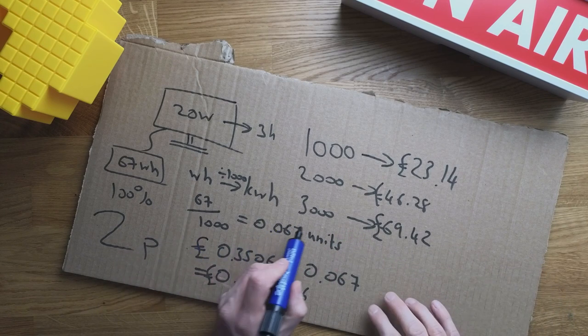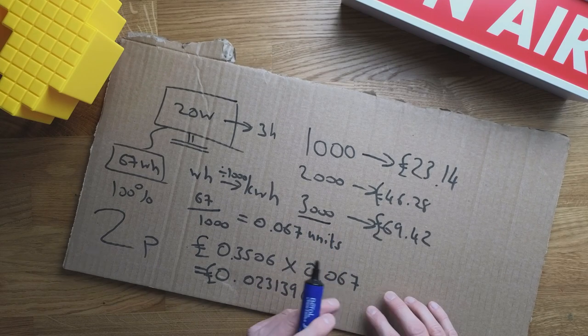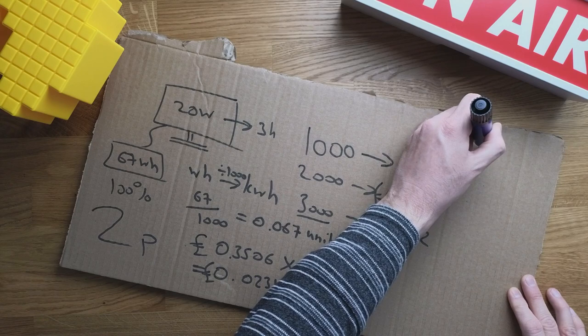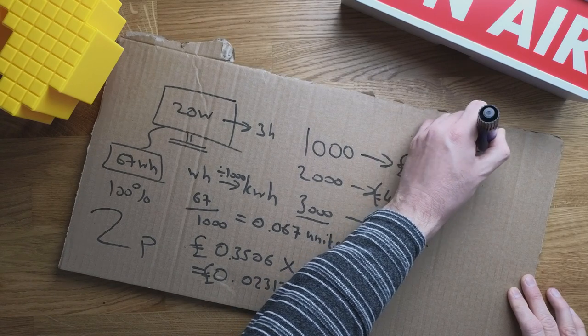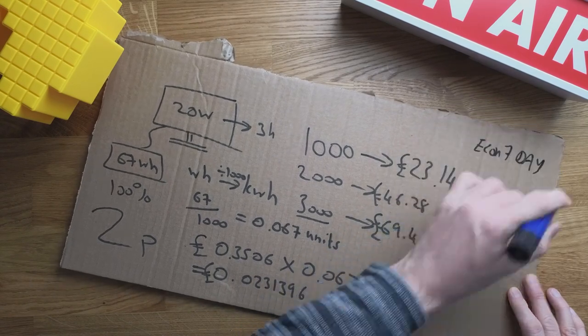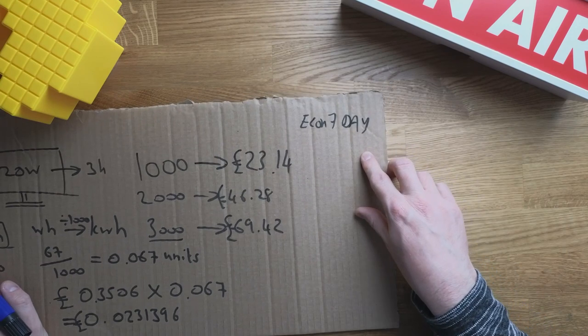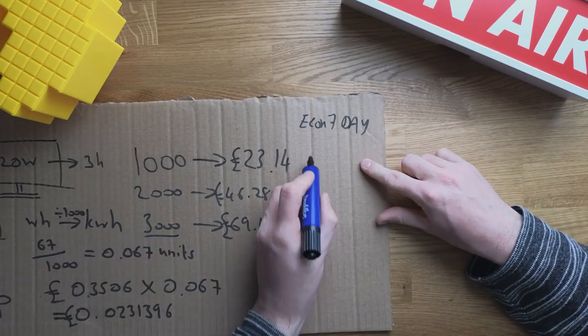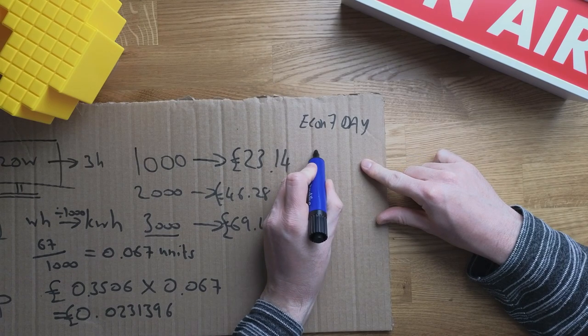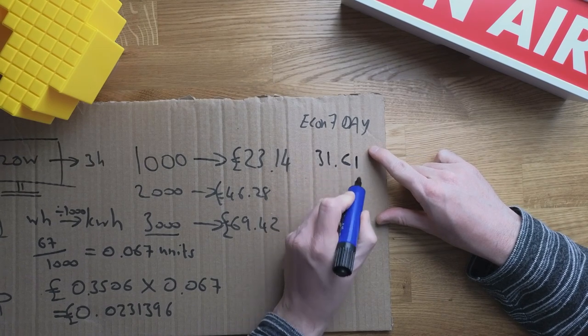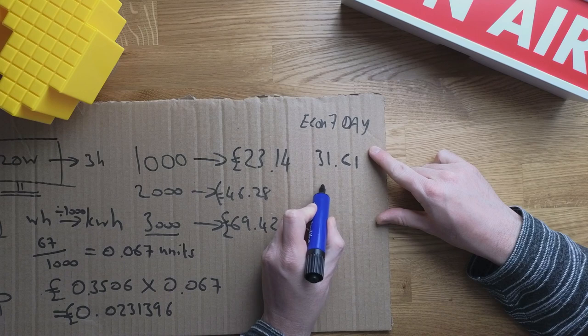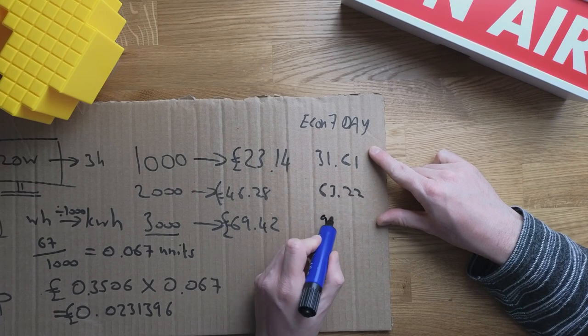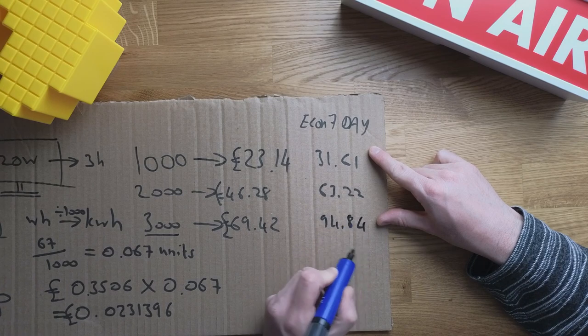It's not from a brand I recognize. Is it going to last for 3,000 charges? I don't know. Let's say I use economy 7 in the day, which is more expensive. At 1,000 charges, the £23 becomes £31.61. At 2,000 it becomes £63.22. And at 3,000 it becomes £94.84.